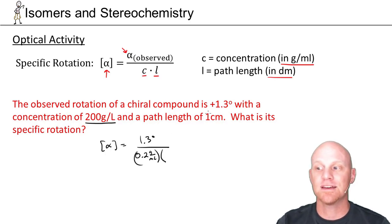Then divided by the path length in decimeters, not centimeters. One centimeter, it turns out there's 10 centimeters in a decimeter, so then one centimeter would only be 0.1 decimeters.